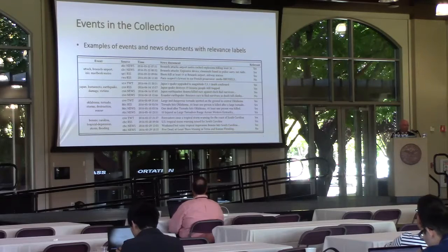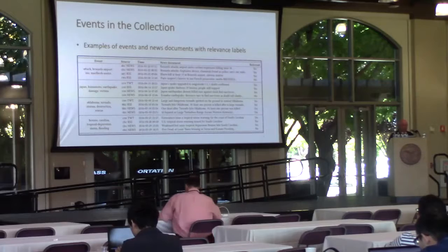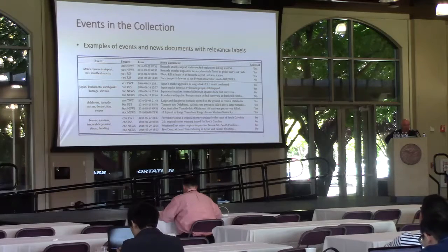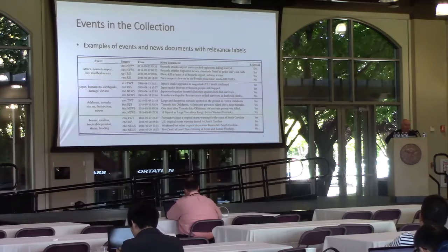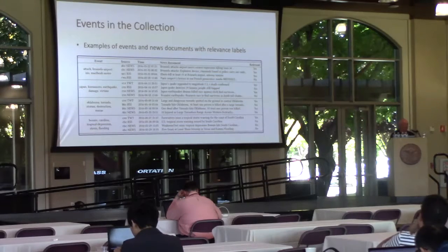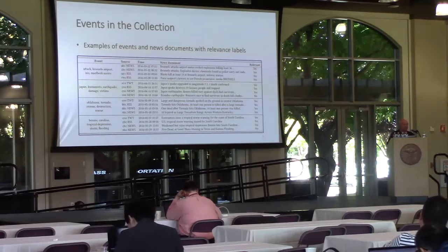Here is an example of an event we gathered — an attack on the Brussels airport by ISIS. What we found quite important was that different sources had published the news at different times, as you can see from the titles and timestamps. In the project for which this collection was created, it was very important to find out who first talked about this event, and whether other news sources were picking it up — by copying the text, making a direct reference, or reusing part of the text without attribution. By looking at this snowballing effect, you could evaluate the importance of the event.